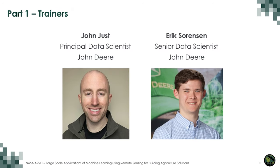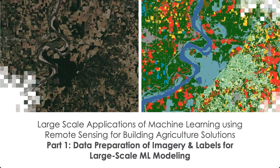It is now my pleasure to introduce the guest trainers for today's webinar: Dr. John Just and Eric Sorensen. Dr. Just is a Principal Data Scientist at John Deere and an Affiliate Assistant Professor at Iowa State University in the Agricultural and Biosystems Engineering Department. Mr. Sorensen is a Senior Data Scientist at John Deere, where he utilizes large-scale remote sensing data and machine learning to unlock insights and efficiencies for agricultural producers. Eric then introduces himself as a Senior Data Scientist at John Deere, happy to present the series. John confirms he is a Principal Data Scientist at John Deere and Affiliate Faculty at Iowa State University.